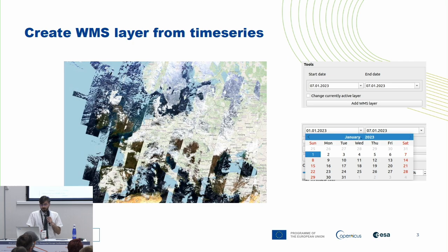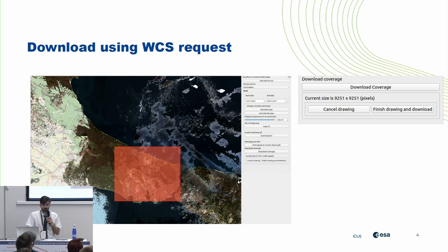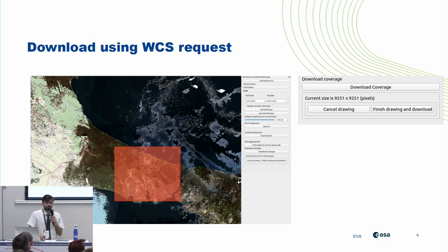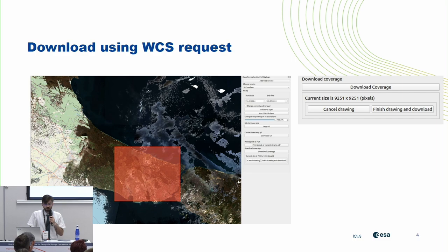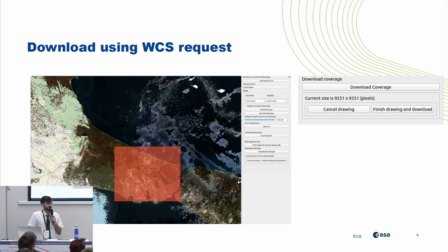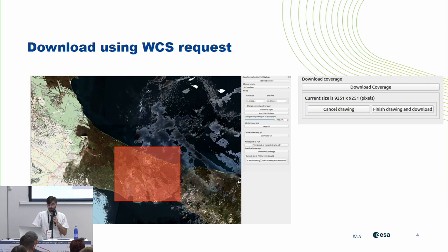Besides visualization, there's also a downloading function where all you need to do is define a time series, like in the previous step. You also need to define a bounding box, and you do this just by drawing it on the map. With those easy steps, you can download the original data at maximum resolution — 10 meters by 10 meters — and it's downloaded in GeoTIFF format, so you can do whatever you want with it on your machine.